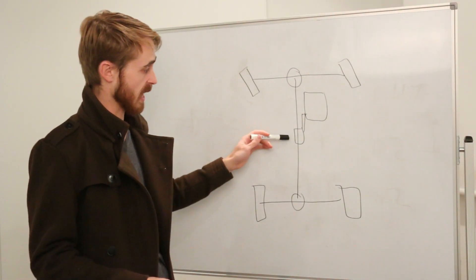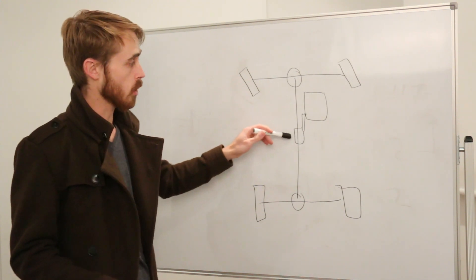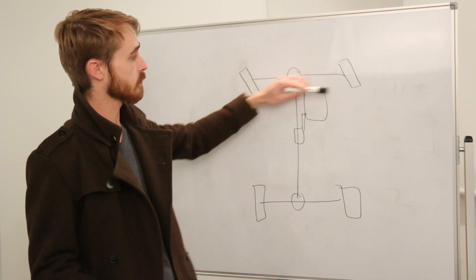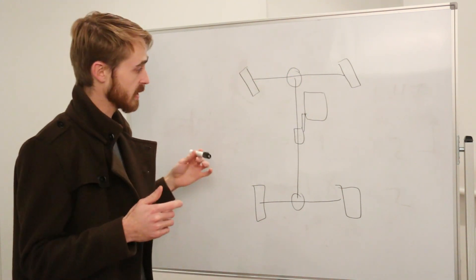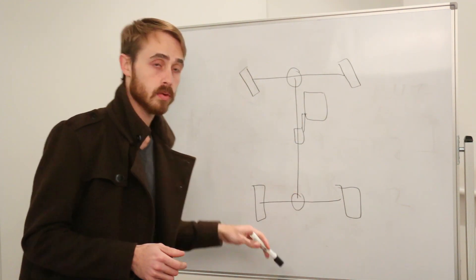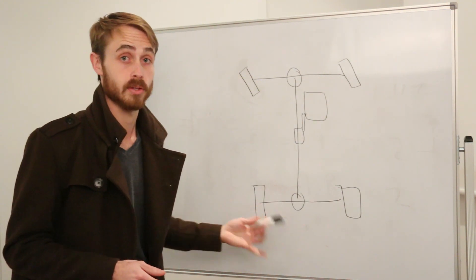And the center differential is no different in this respect. If this center differential is open and you lose traction on both the front wheels, it will allow the front to spin up, and you're going to end up with a loss in overall motive force because your axle with grip isn't going to be putting any power to the ground.